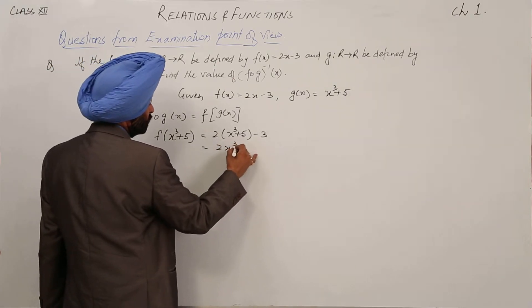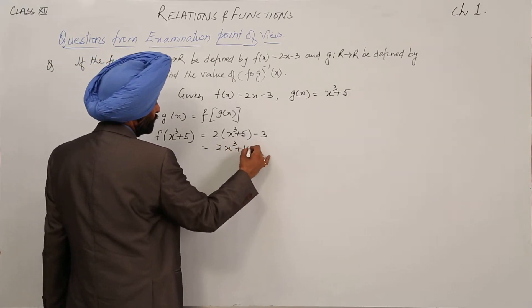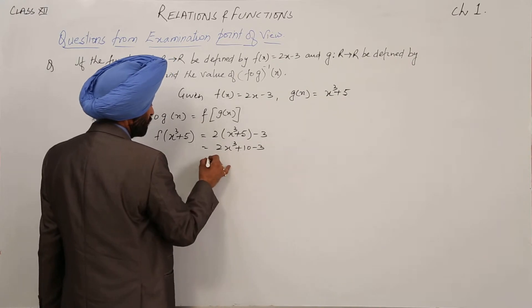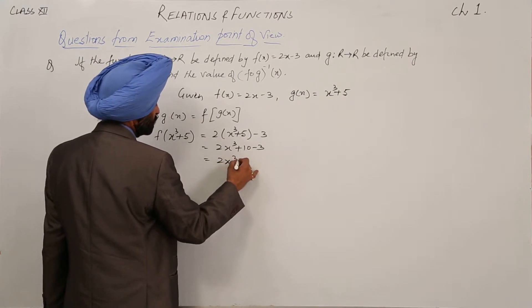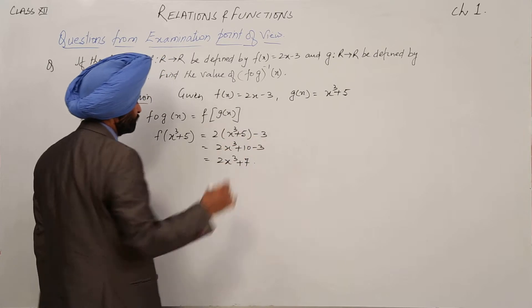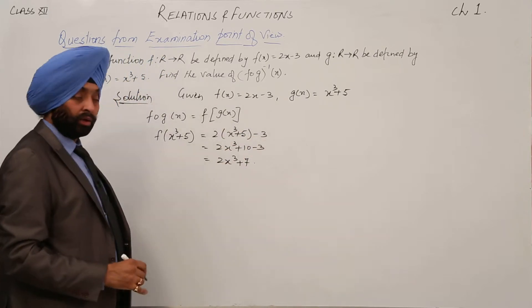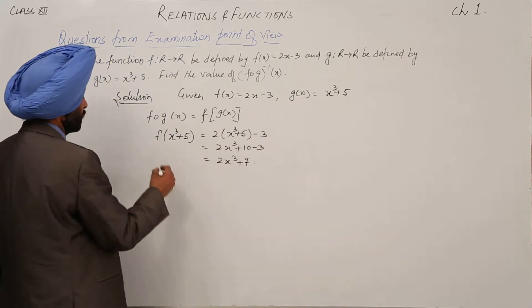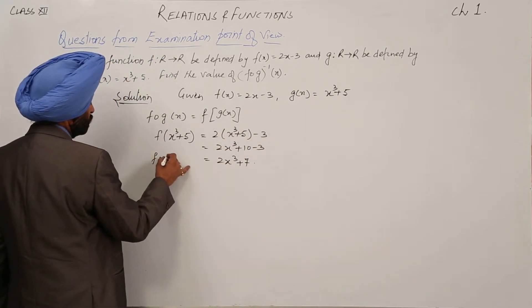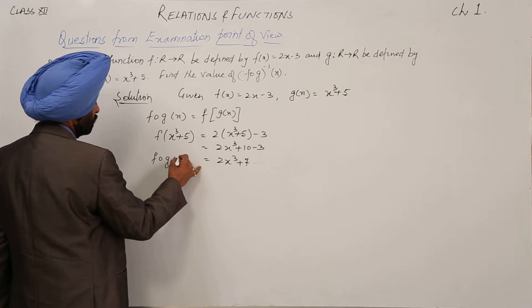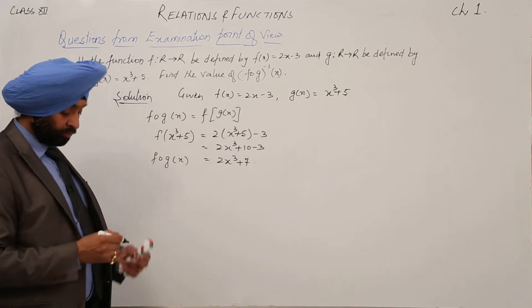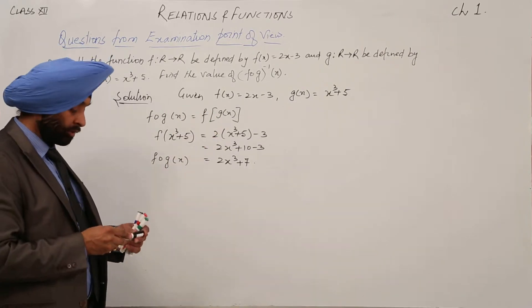That gives us 2x cube plus 10 minus 3, which equals 2x cube plus 7. So fog(x) = 2x cube plus 7.